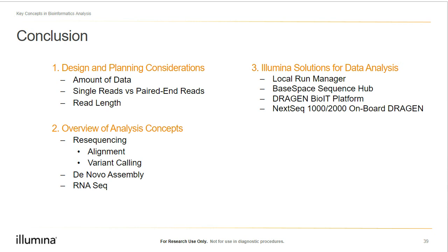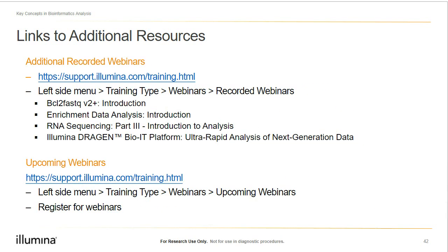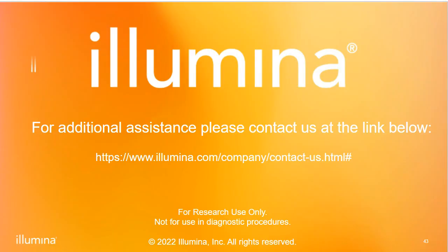To conclude, we talked about design and planning considerations before starting an experiment — including the amount of data needed, whether reads will be single or paired-end, and the read length. We covered analysis concepts regarding resequencing for both alignment and variant calling, discussed de novo assembly analysis, and covered RNA-seq. We finished with Illumina solutions for data analysis: on-instrument analyses via Local Run Manager, cloud options through BaseSpace Sequence Hub, the DRAGEN BioIT platform, and on-instrument NextSeq 1000/2000 DRAGEN pipelines. Here are links for additional resources on coverage, FASTQ files, multiplexing, and additional recorded webinars. Thank you so much for attending this webinar today.